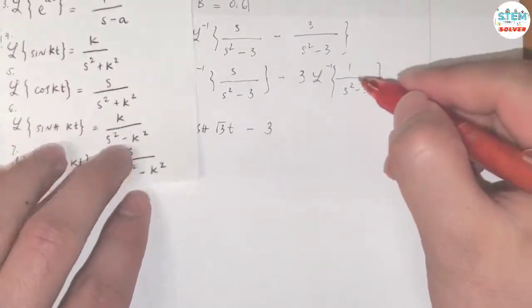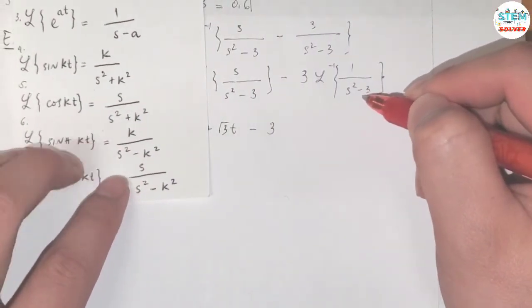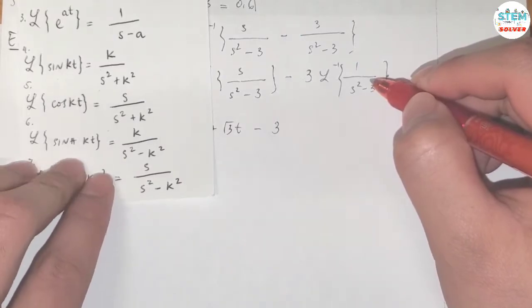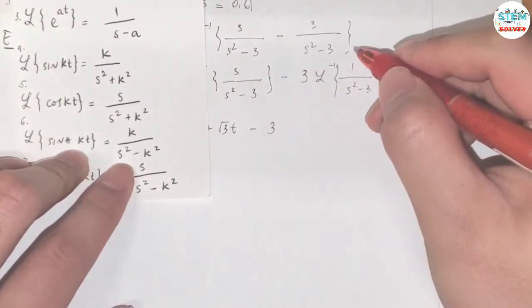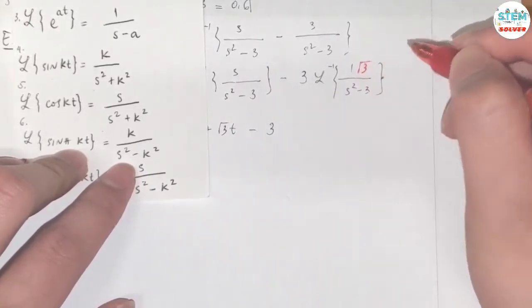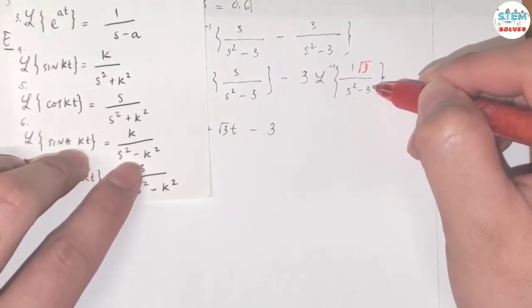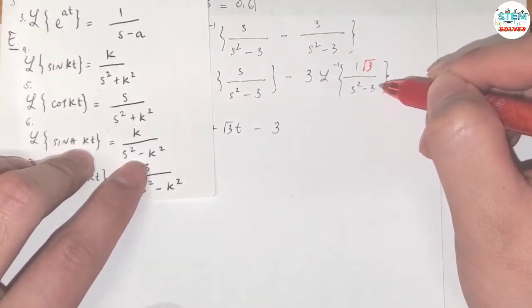For this one, it almost matches the formula of cosine. As long as we have square root of 3 on top. So the k is square root of 3 again.